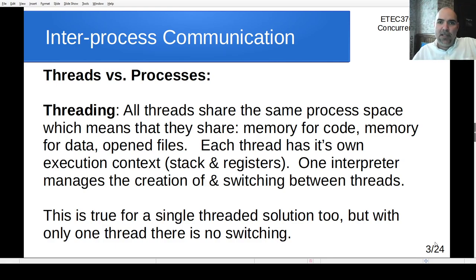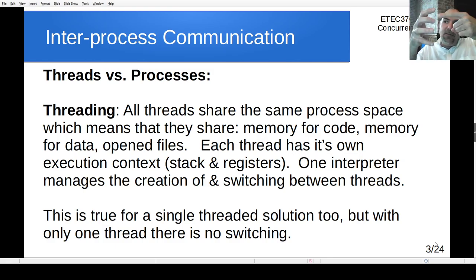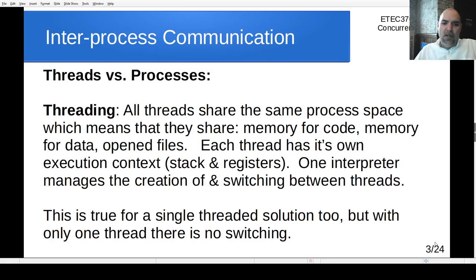Rather than one program counter and one stack, we have two completely separate sets of those. But the global memory space where code and data live, and the file/IO resource tables the OS maintains, are all shared. In Python, one interpreter manages all of that, switching between threads. One thread runs for a while, gets interrupted, execution jumps to another thread, and so on — cycling through however many threads there are.